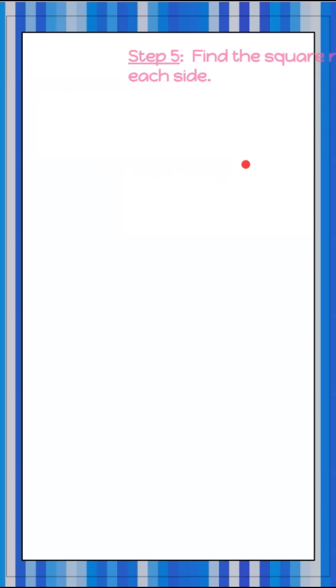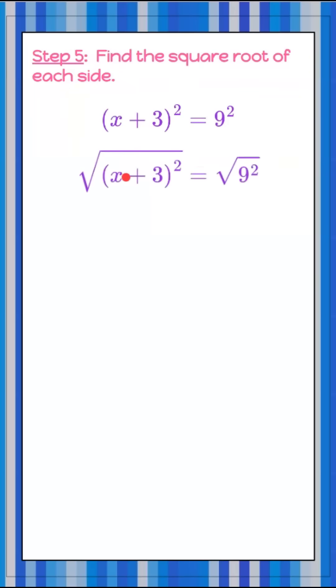So step five is going to be to find the square root of each side. The square root of x plus 3 squared is x plus 3. The square root of 9 squared is positive or negative 9. There are two roots.